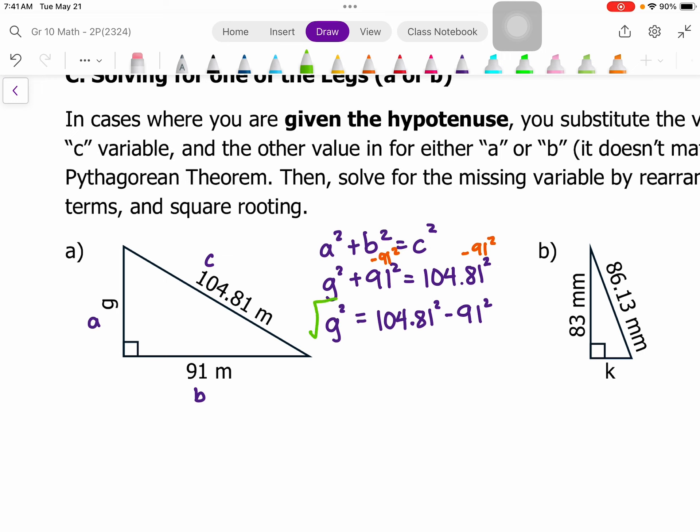So that is equal to, so I'm going to square those and subtract them, and that's equal to 2,704.1361. So this I'm going to square root, and that's going to leave me with just side length g, and the square root is 52.0, and my units are in meters.